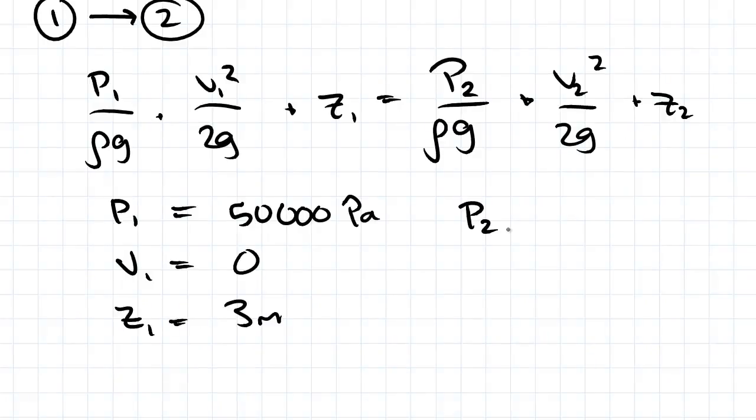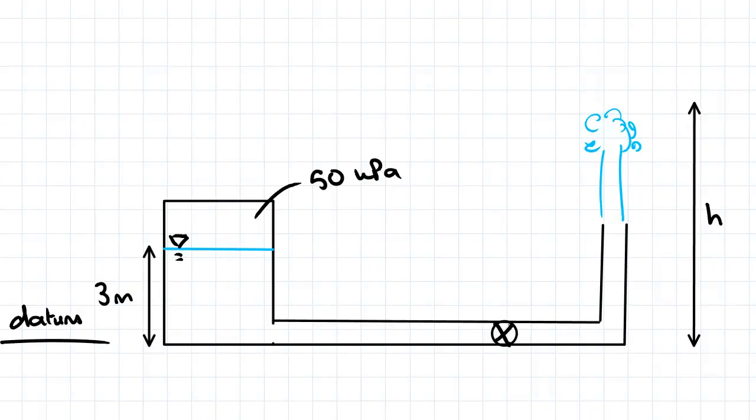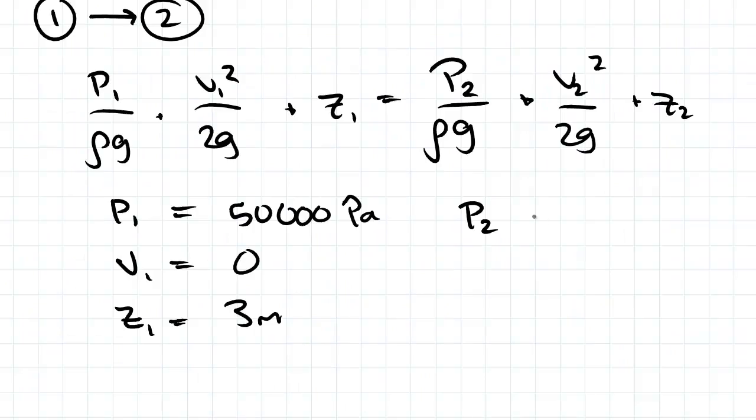Our pressure 2 will be unknown because that's what we're trying to find. Pressure at the valve. I'll call it P2, I suppose. V2 we know to be 0 because the valve is closed.